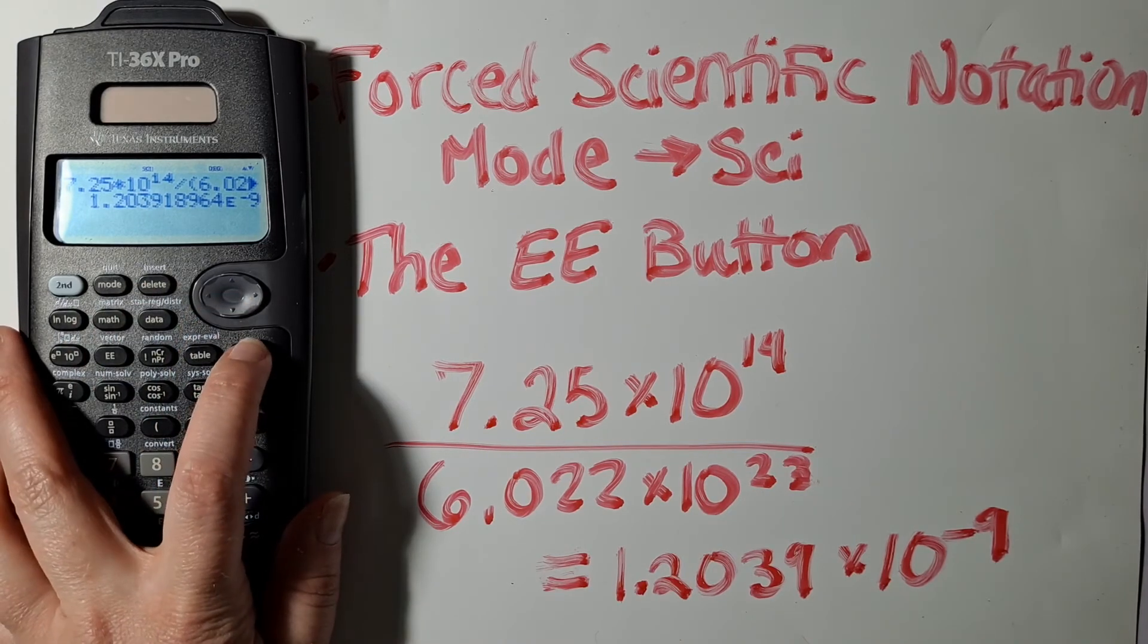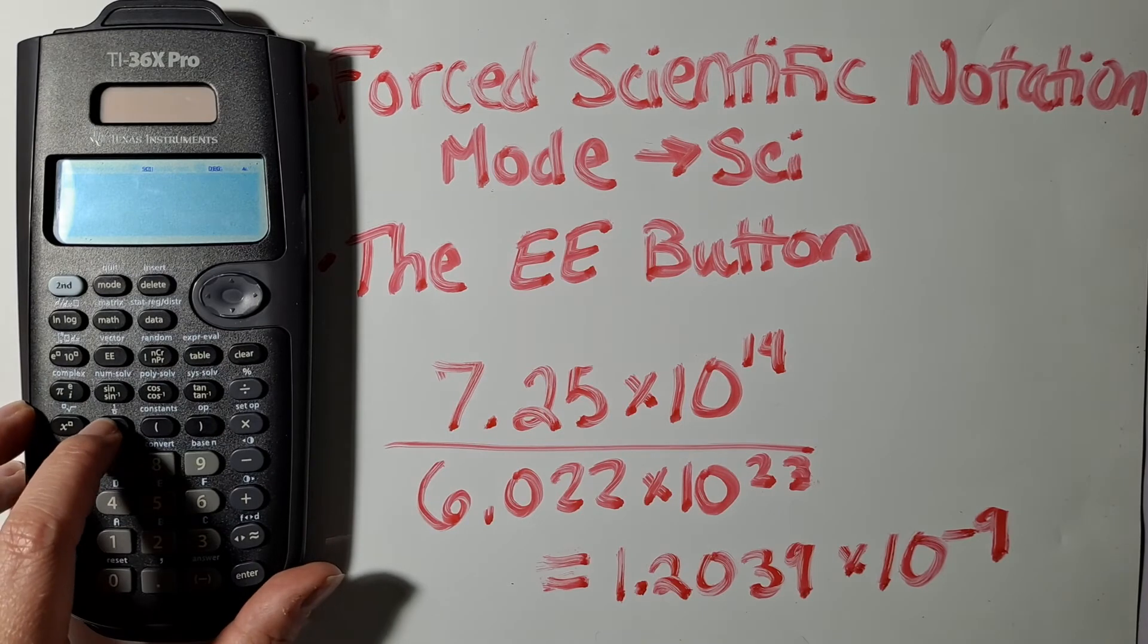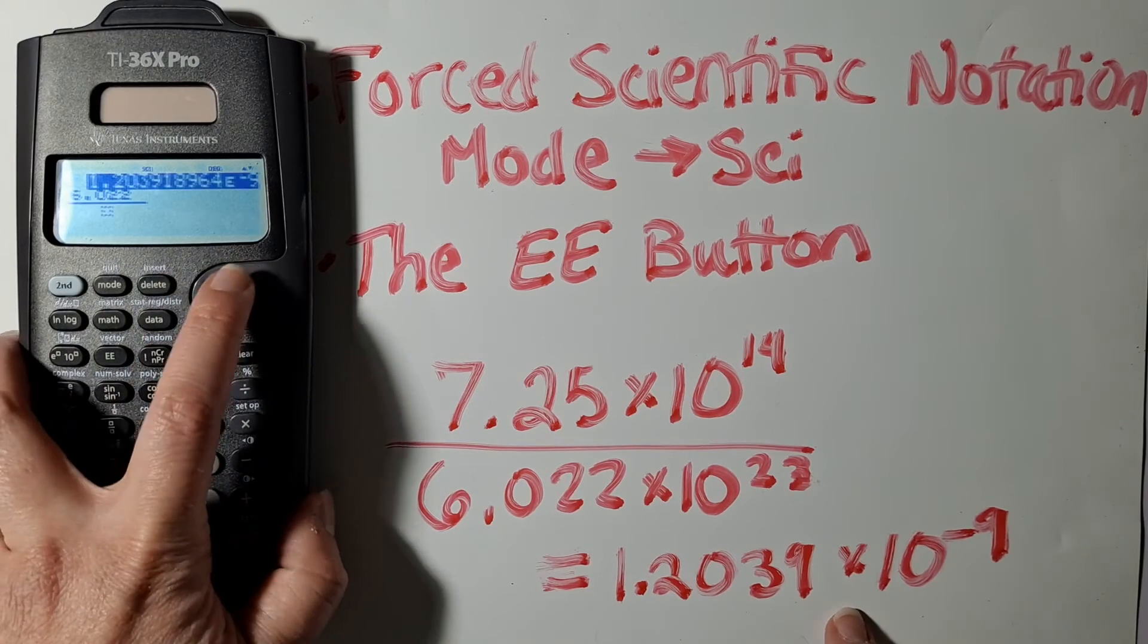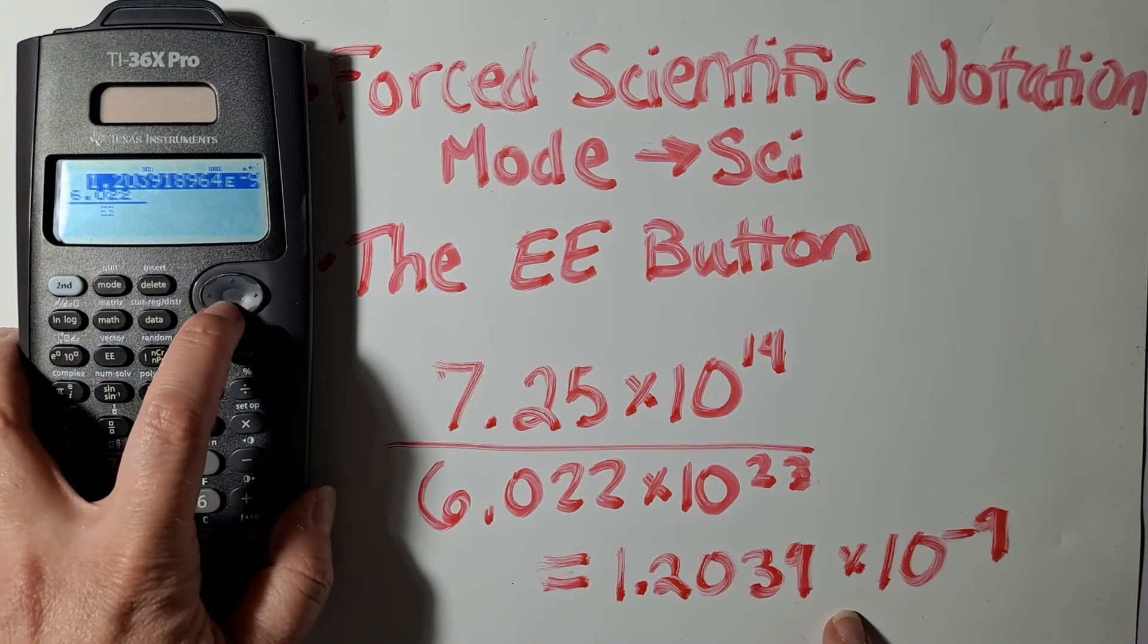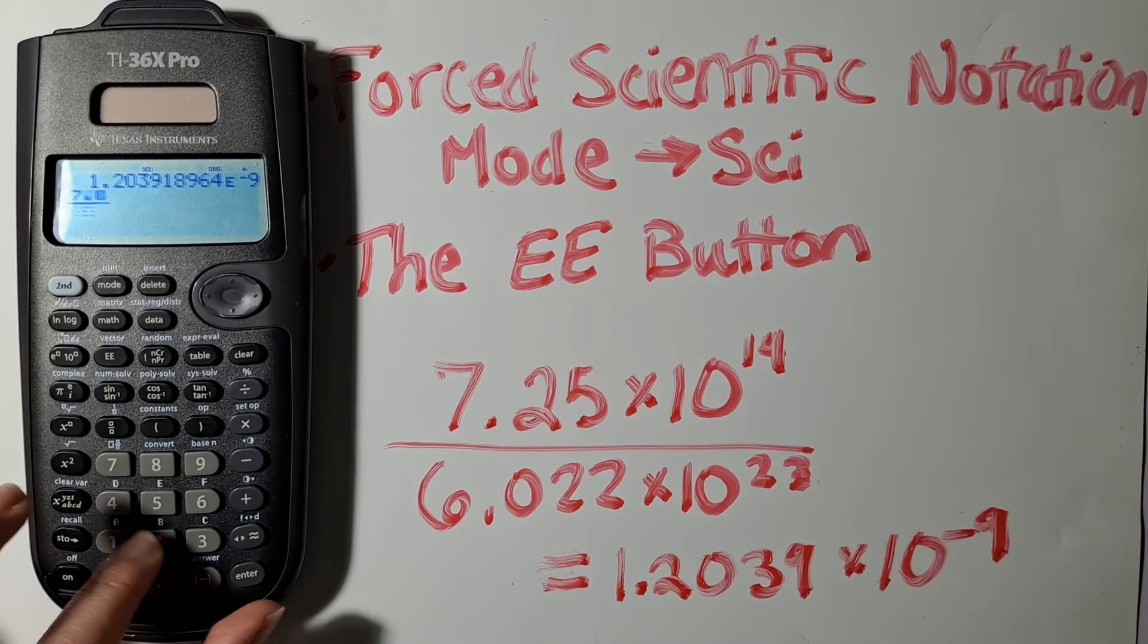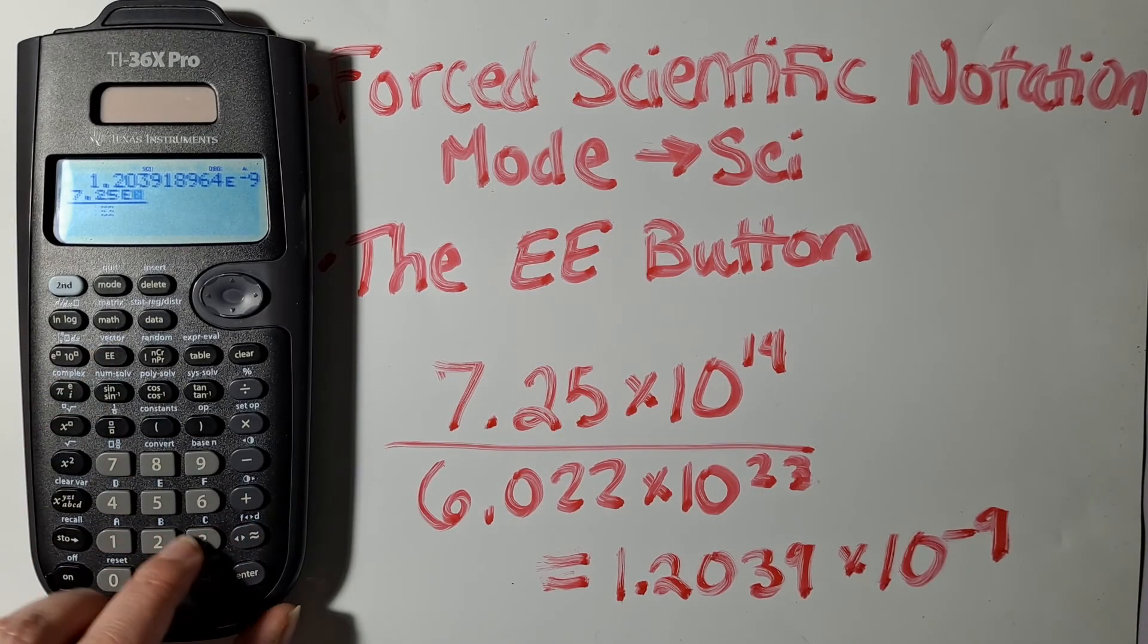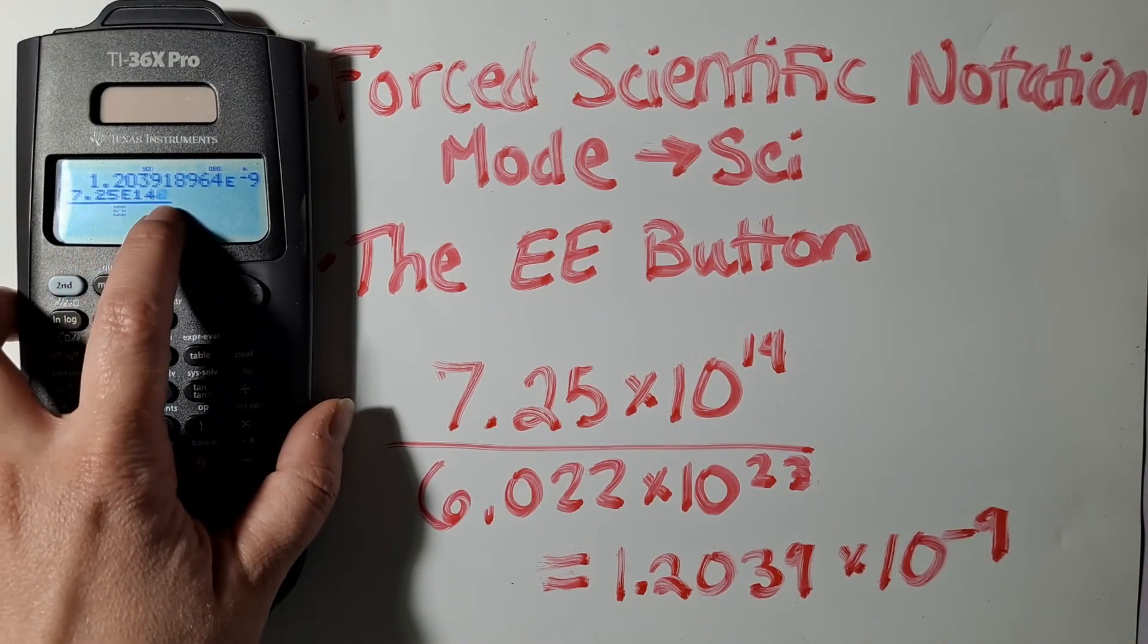An alternative is that you can use this nice fraction button. And you saw in the previous answer that your calculator has an E. We can actually use that E to type in our scientific notation from the beginning. That E is located here. It's two E's in a row. And so we're going to hit that, and that stands for 10 to the power of.